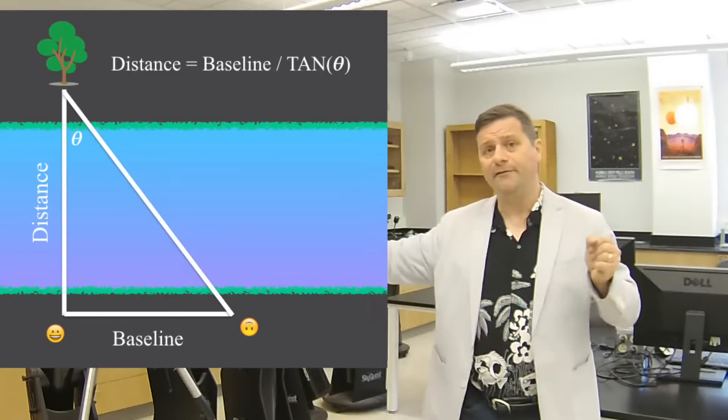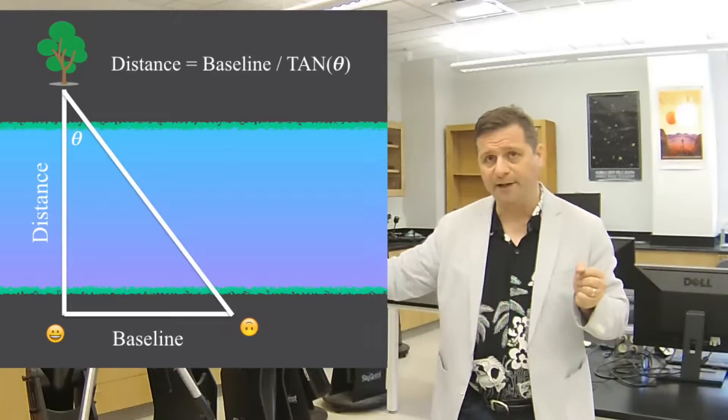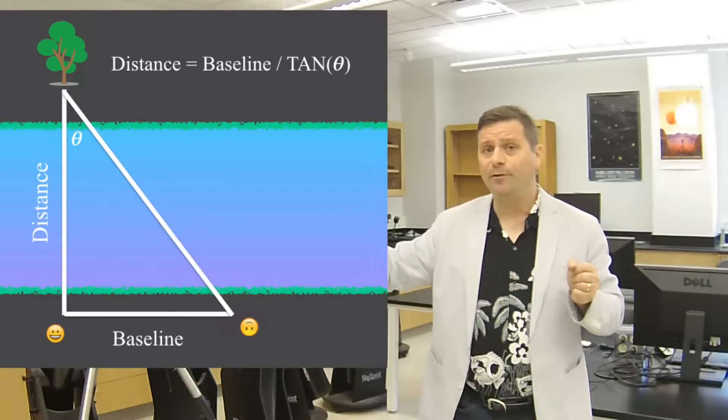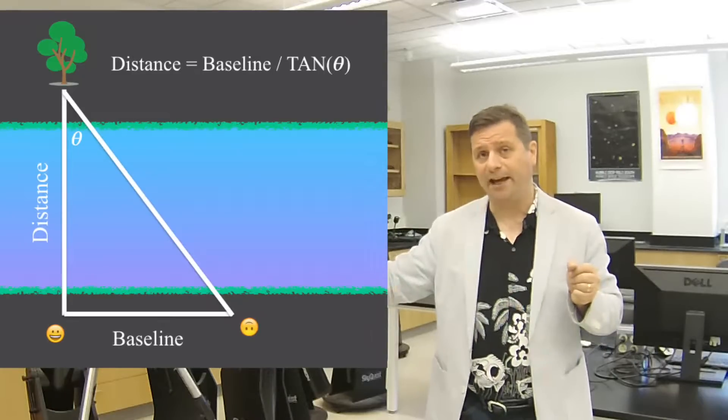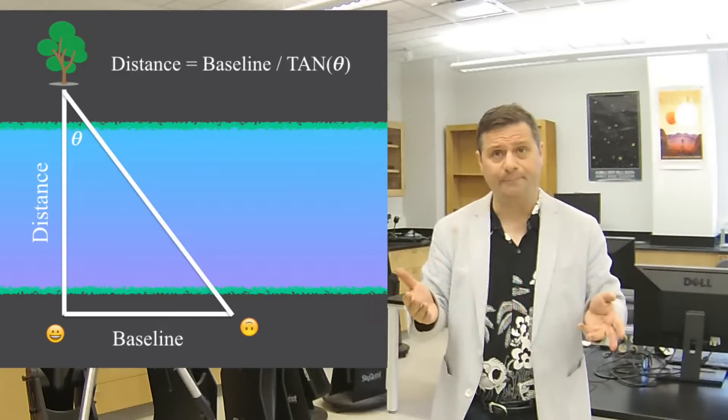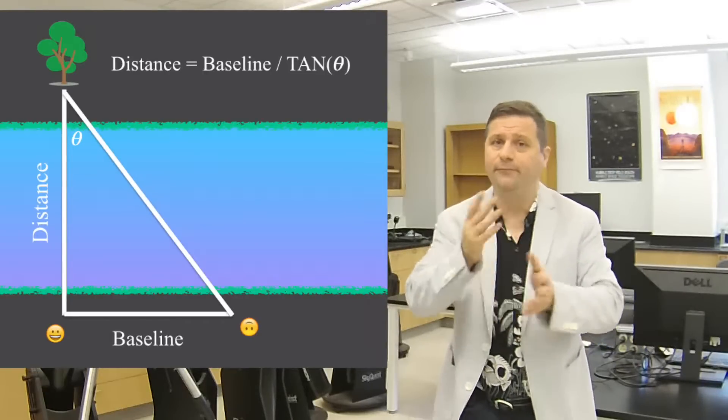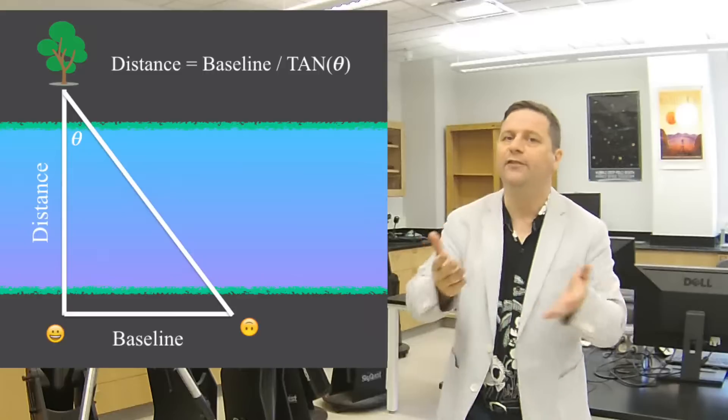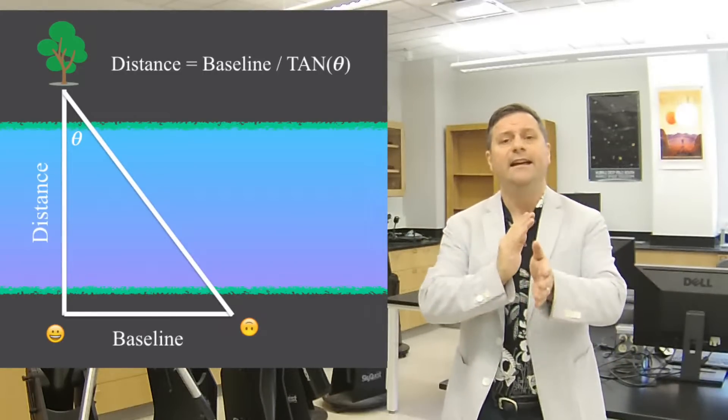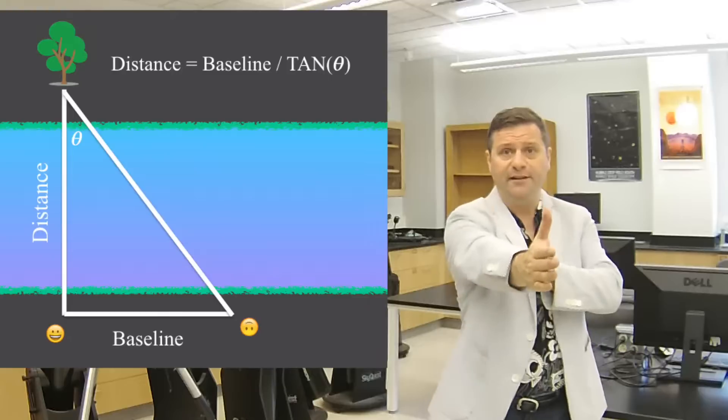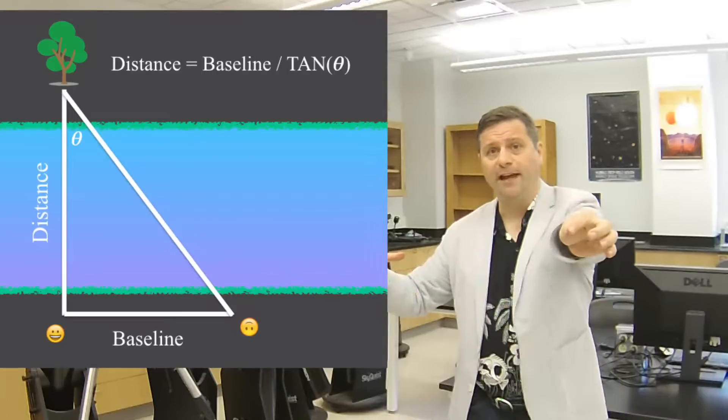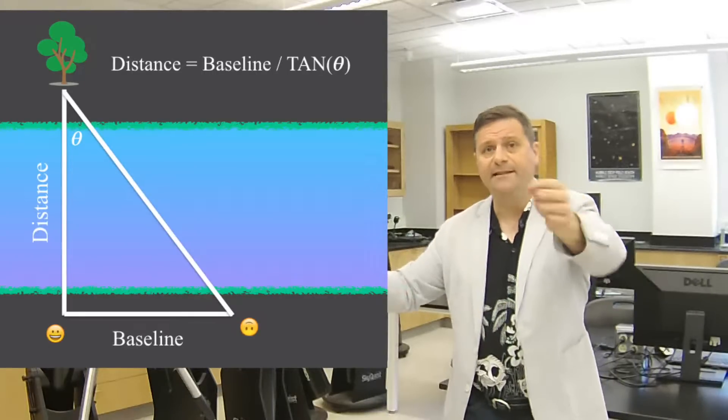When you get to the other end of the baseline, you put down your telescope again and sight to the tree. You find that the angle between the sight line at the second location and the baseline is not 90 degrees, it's less than that. We're simplifying it just so the idea gets across.